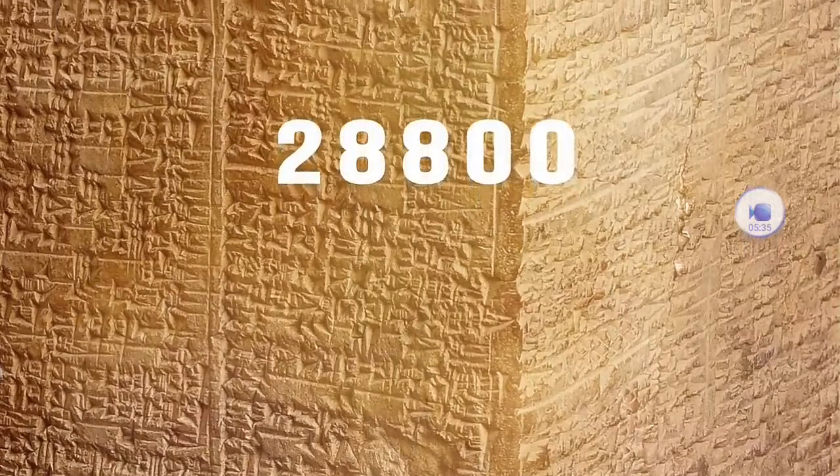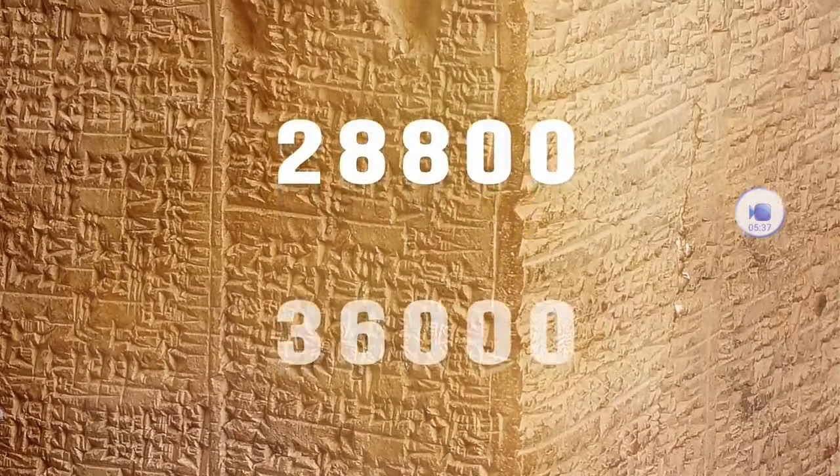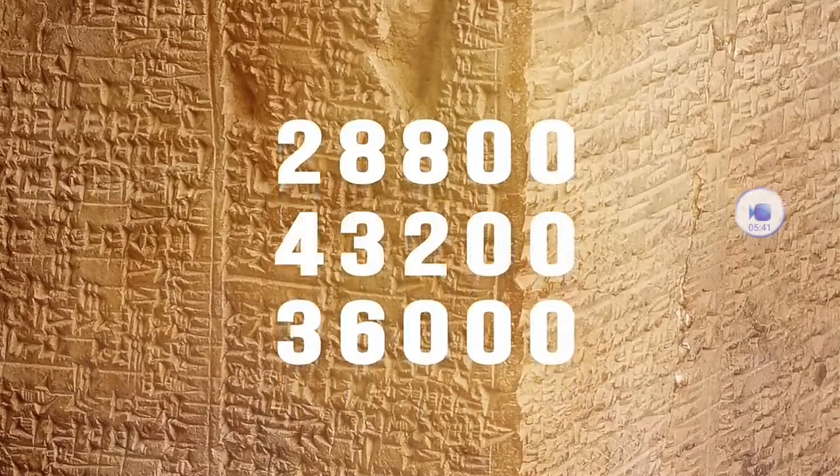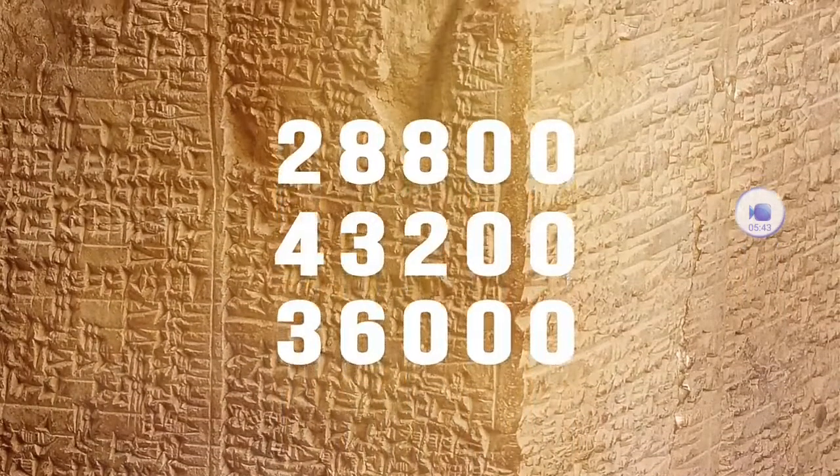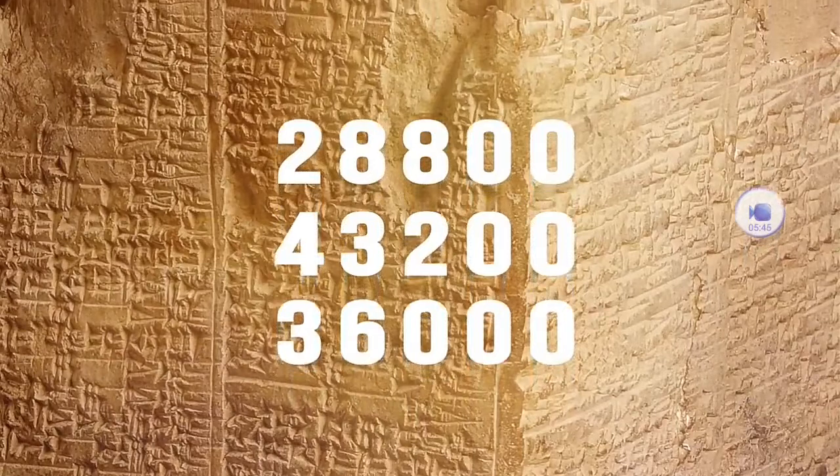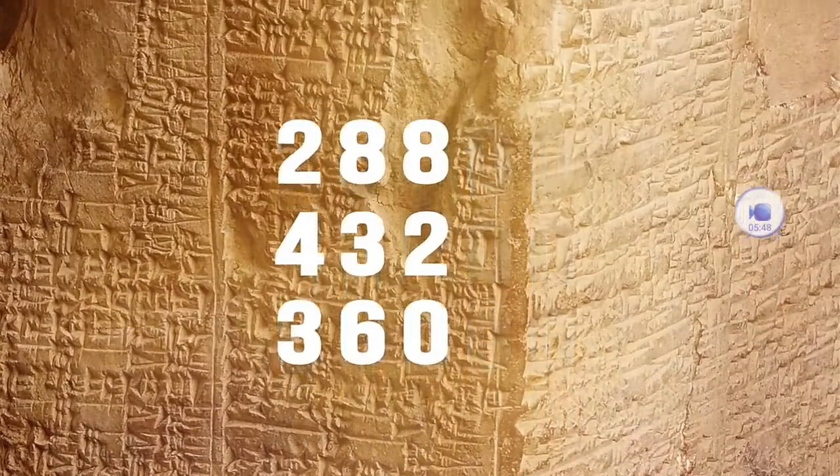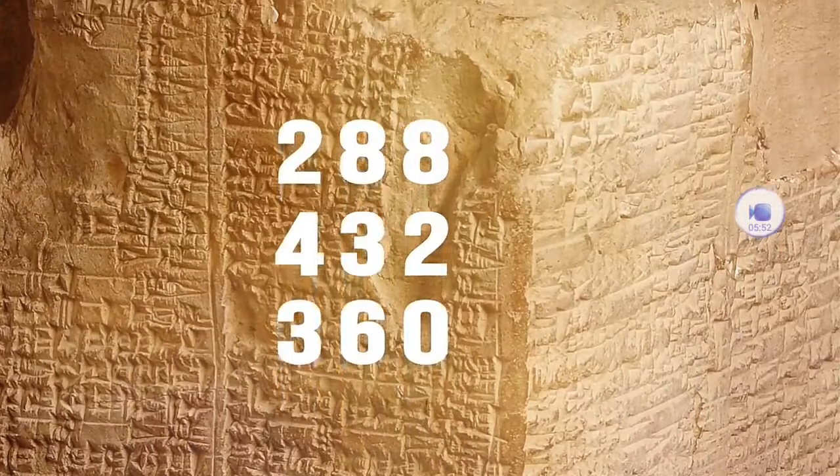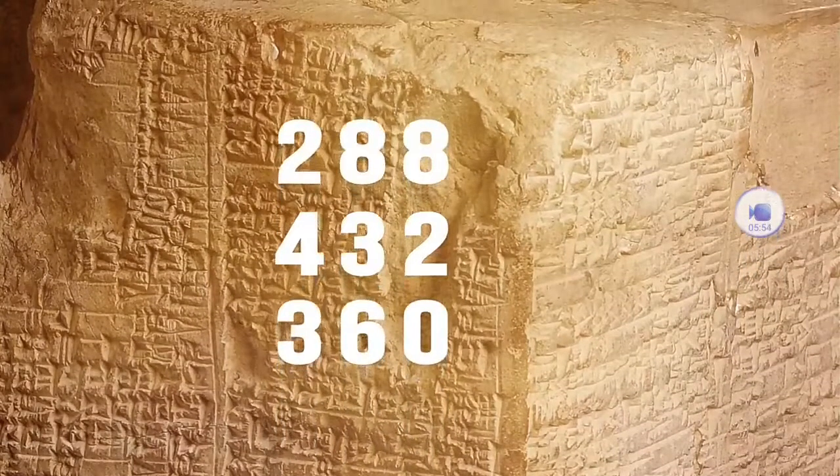28,800, 36,000, and 43,200 years. Do these numbers look familiar to you? They should, for they are all sequences found on the factor IX grid. But what's even more astounding is the fact that, when played together as frequencies, they create the same major chord revealed by the Fibonacci sequence.